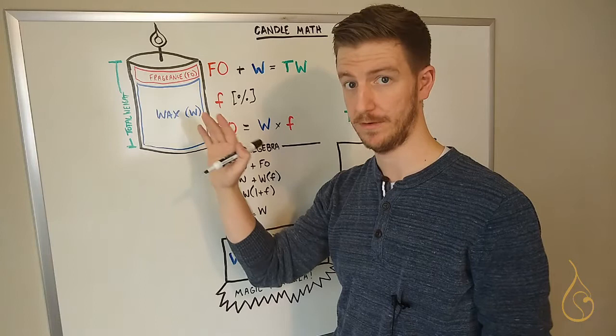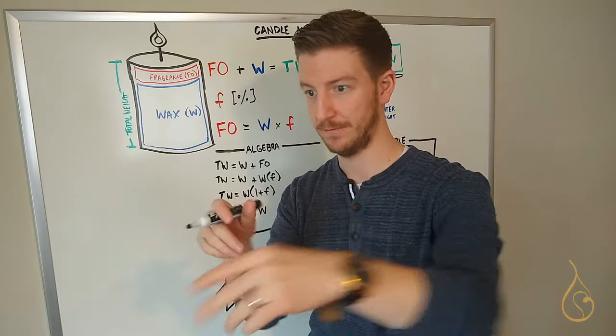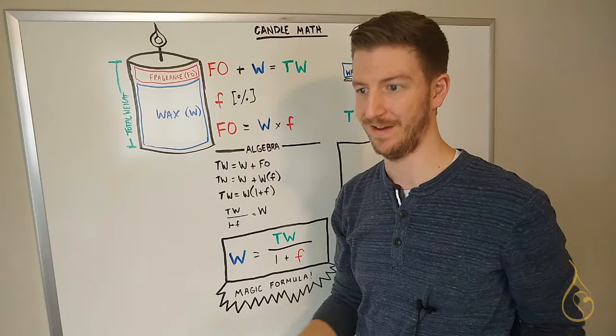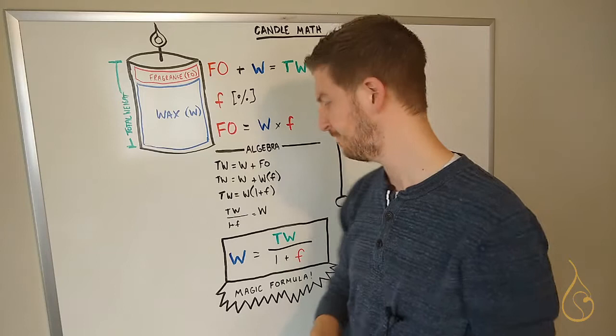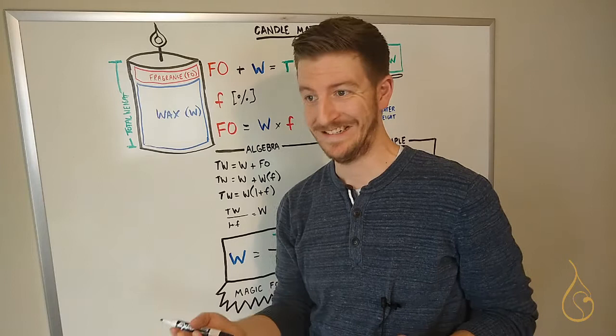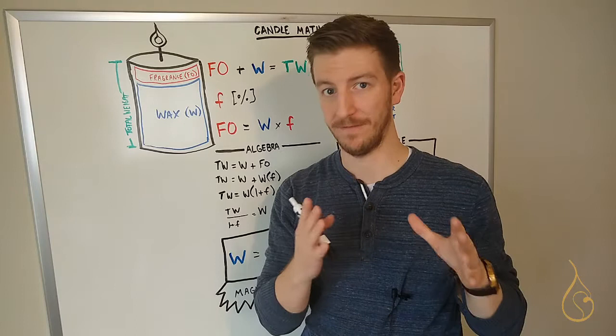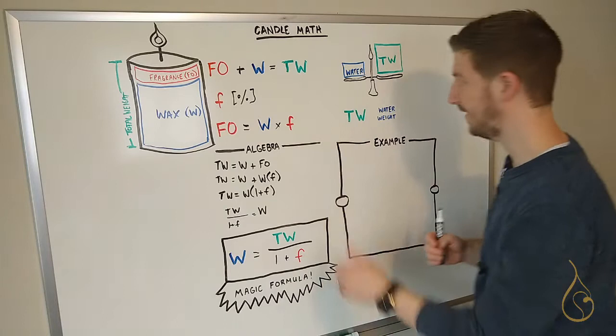So the question on your mind, if you're getting ahead of me, is great, how do I know what TW is? I have no idea. My jar says it holds seven ounces. Does that mean I use seven ounces for that number? Or I've heard some people say just fill it with water and measure that weight. Well, not really, but we do have a bit of a hack we can use, a little bit of a rule of thumb to figure out exactly what this TW value should be. And that's where the magic of water comes into play.